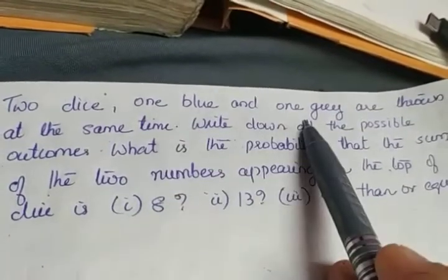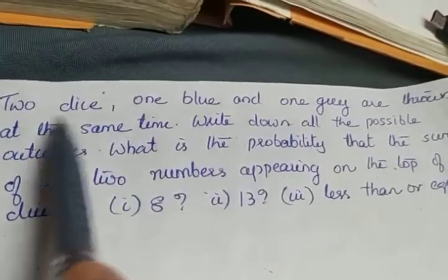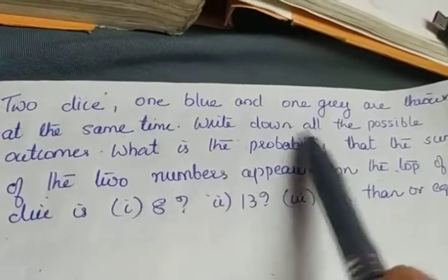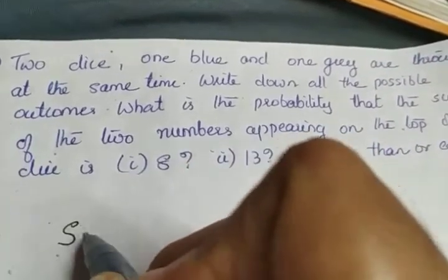The next one: Two dice, one blue and one grey, are thrown at the same time. Write down all the possible outcomes. So we have to write the sample space. Do you remember how to write?